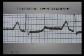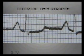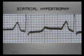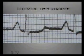If both atria are hypertrophied, the P wave in lead 2 will be both taller than 2.5 small squares and broader than 2.5 small squares. This ECG demonstrates biatrial hypertrophy.